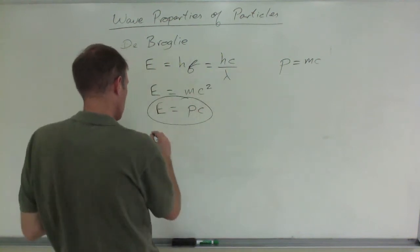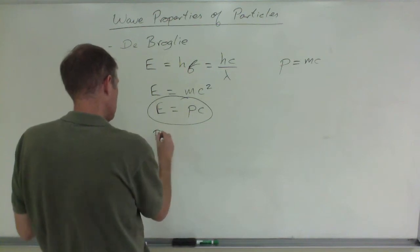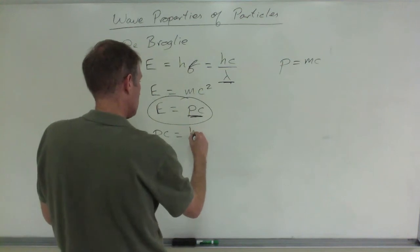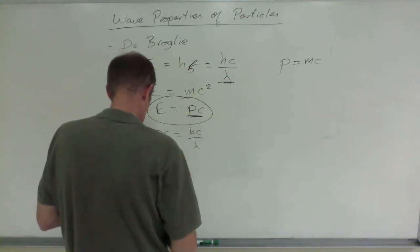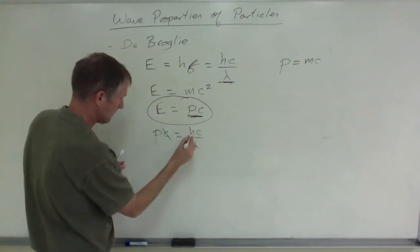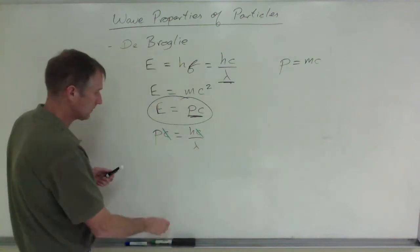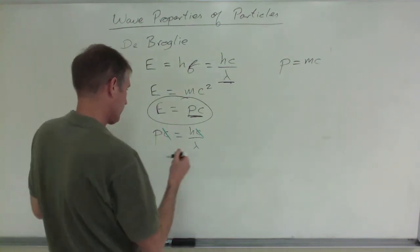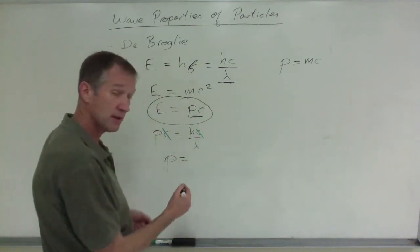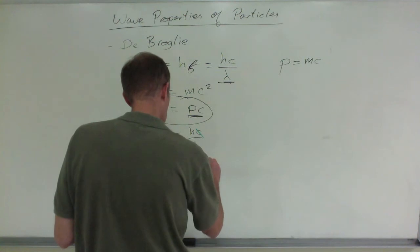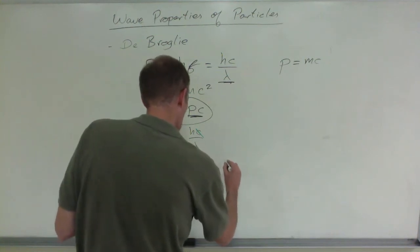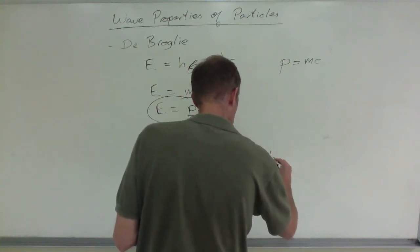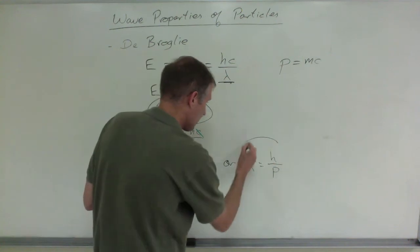So P times c equals hc over lambda. The c's cancel out, and so we end up with momentum equals Planck's constant over wavelength. Momentum, which is mass times velocity, equals Planck's constant over wavelength, or wavelength equals Planck's constant over momentum.